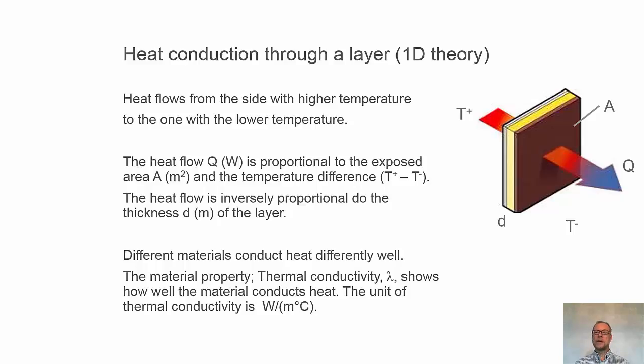This means that if we have double thickness, we'll have half the heat flow. Different materials conduct heat differently well, and we're using the lambda value, or thermal conductivity, as something that describes the material.